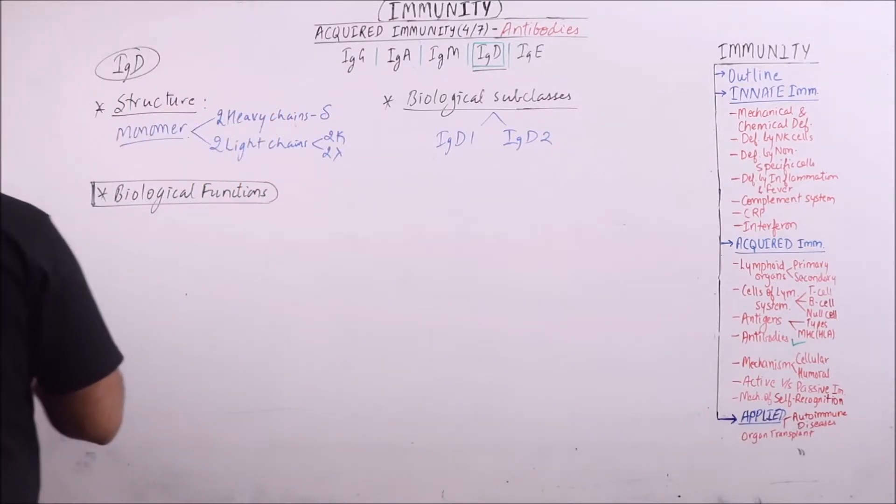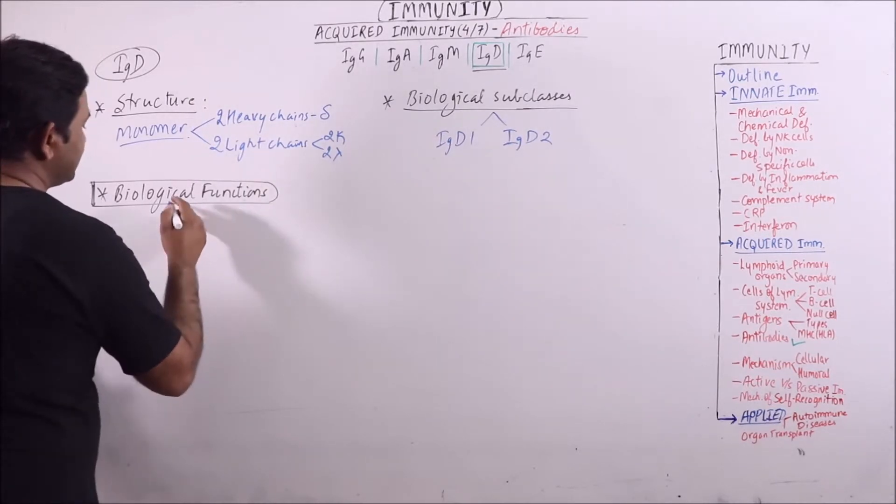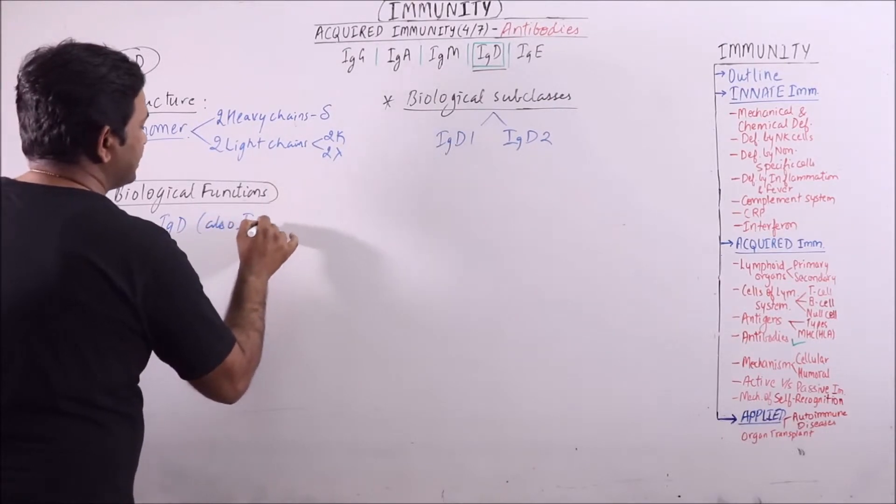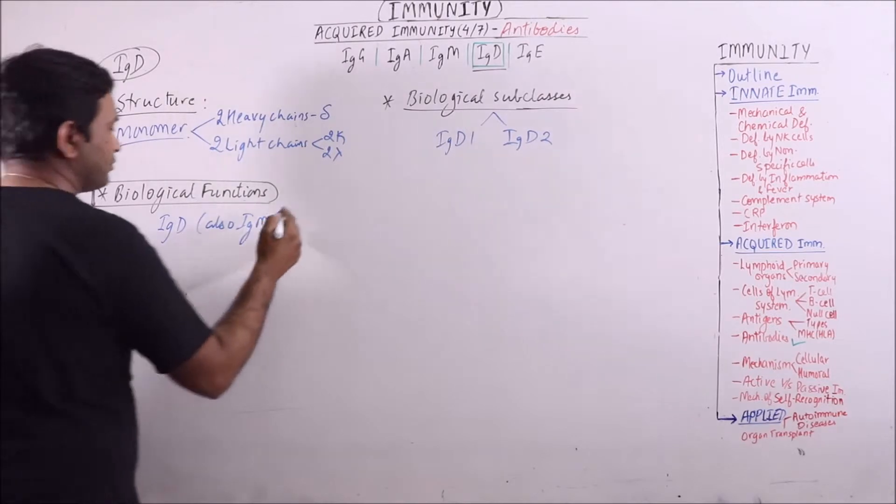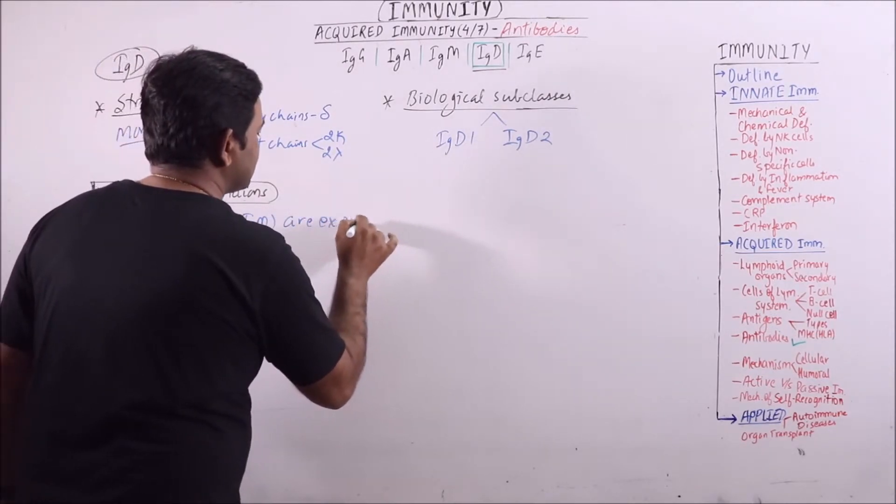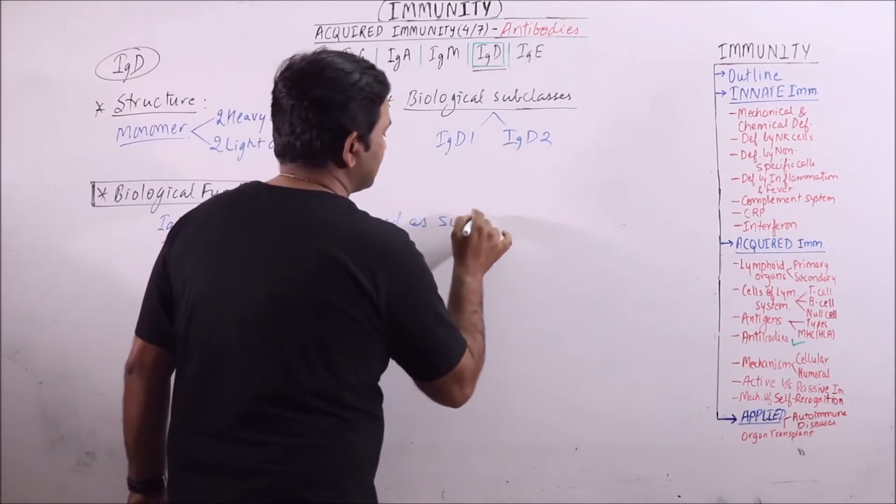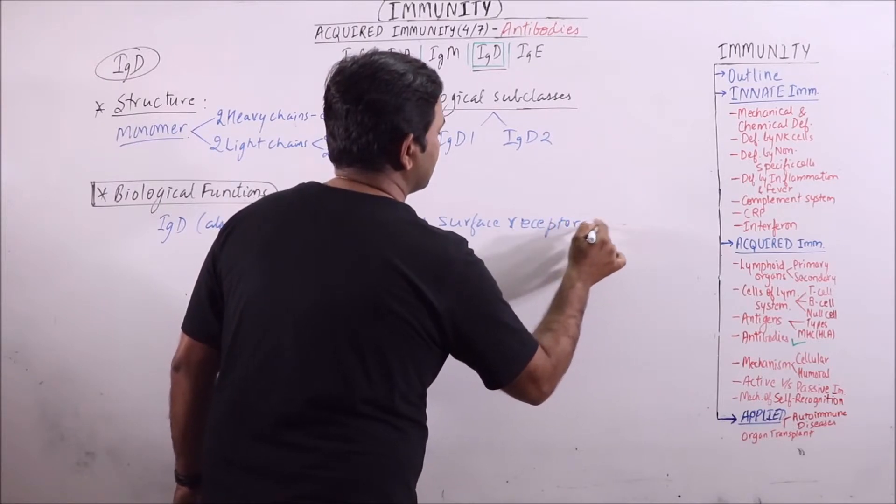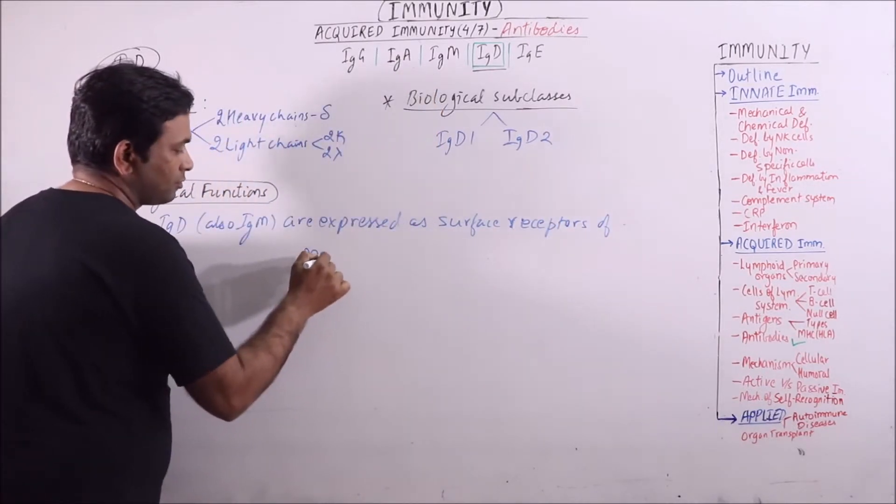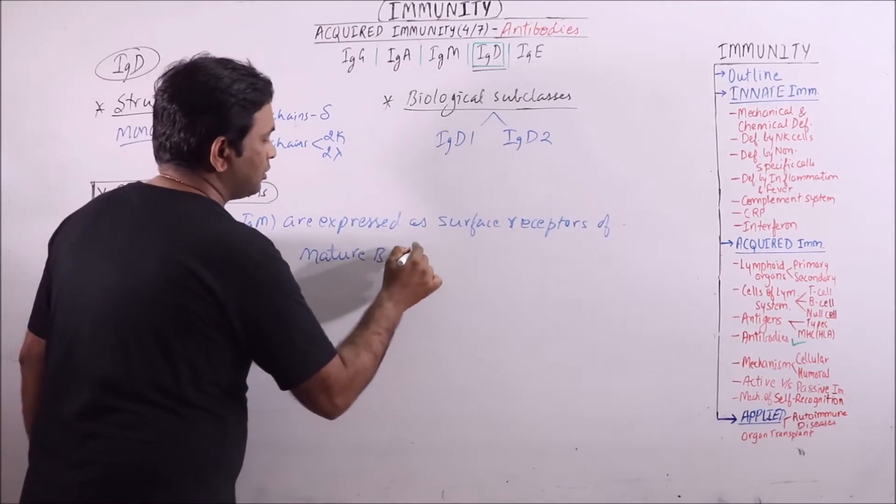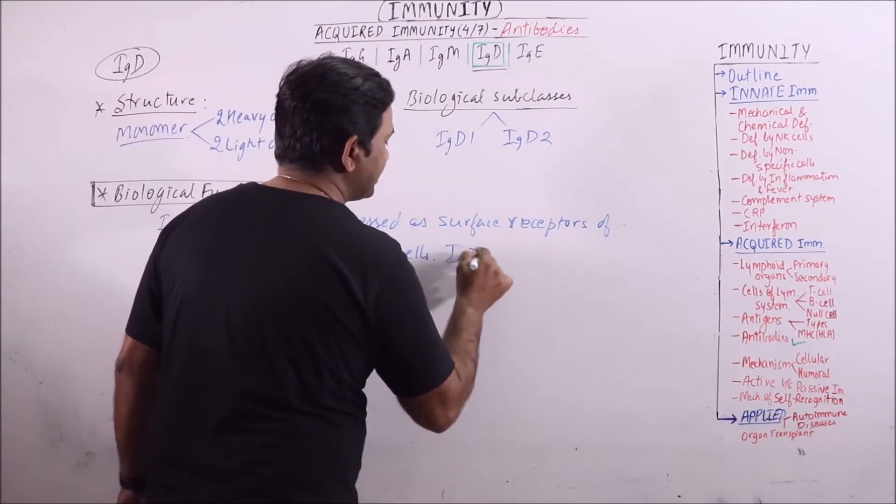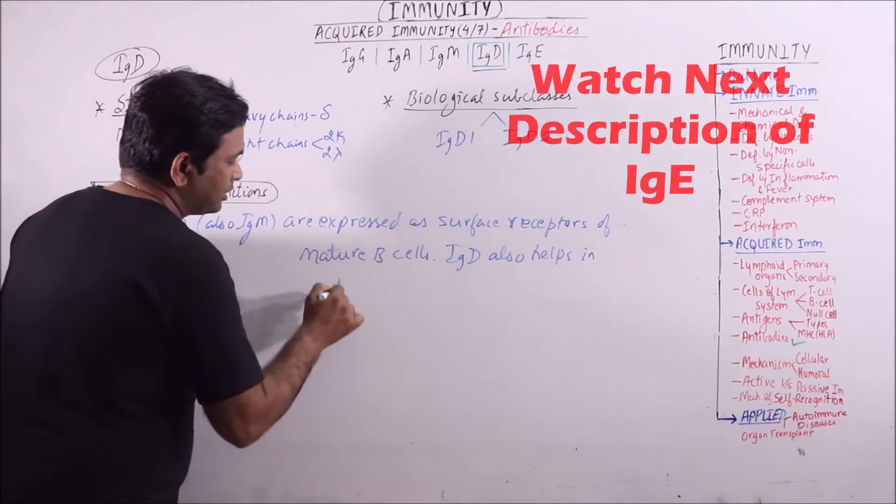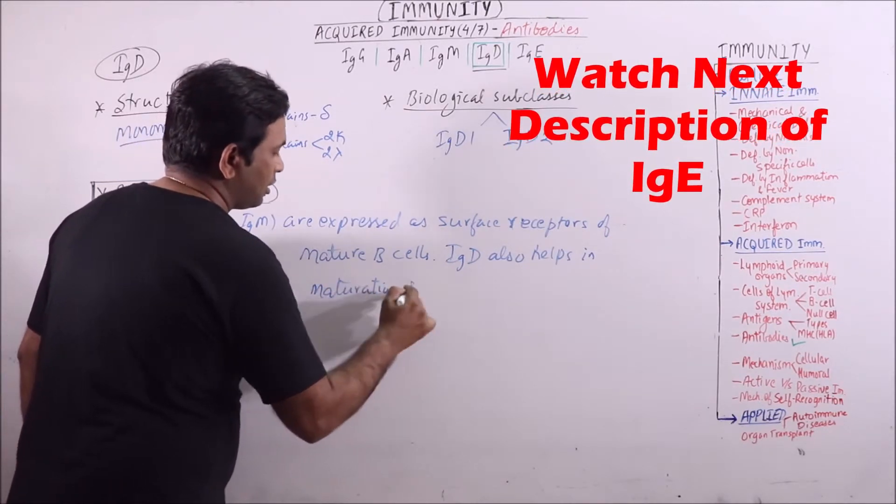The biological function, the most important role, is that IgD, also IgM, the monomer units are expressed as surface receptors of mature B cells. And IgD also helps in maturation and proliferation of B cells.